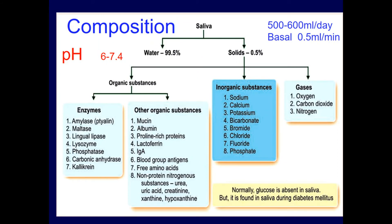The total salivary secretion is about 500 to 600 milliliters per day, and can exceed this at times of need. The basal secretory rate is about 0.5 milliliters per minute — this is the minimal amount of saliva continuously secreted to keep the oral cavity moist. The pH of saliva varies between 6 to 7.4.